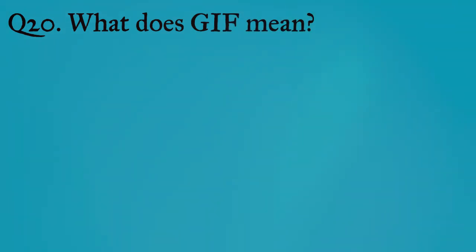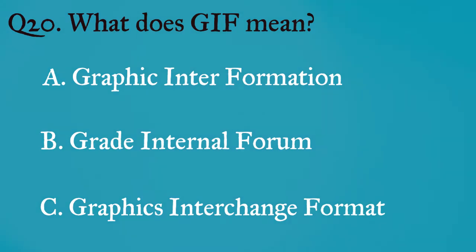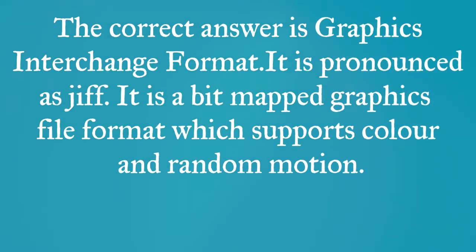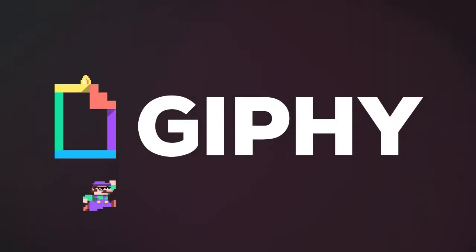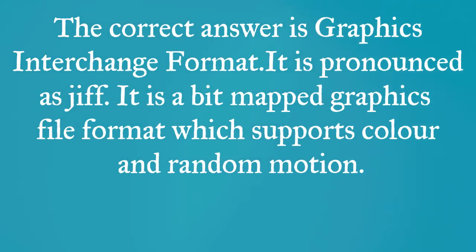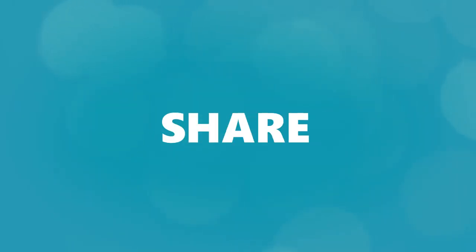Question twenty: what does GIF mean? A) graphic interformation, B) grade internal forum, C) graphics interchange format. The correct answer is graphics interchange format. It is pronounced as GIF. It is a bitmapped graphics file format which supports color and random motion. That's it guys — how many questions did you get correct?